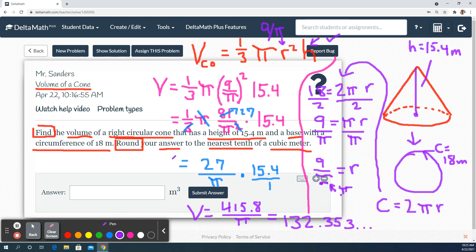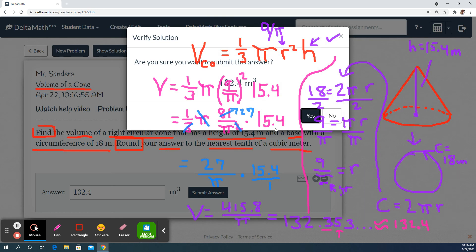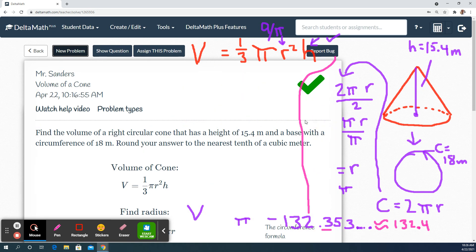And then it wants to the nearest tenths place. So tenths is right here. I look at the next number. It's a five or greater. So I round up. So this is now approximately equal to 132.4. Got it.